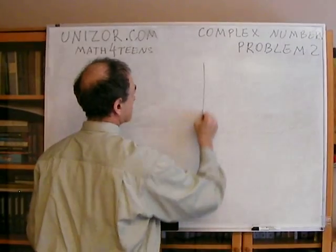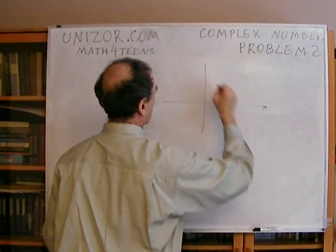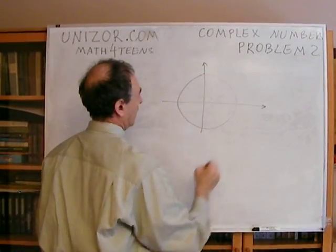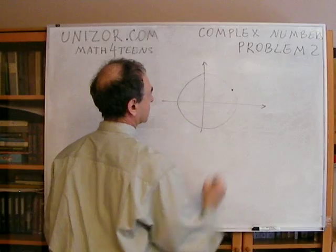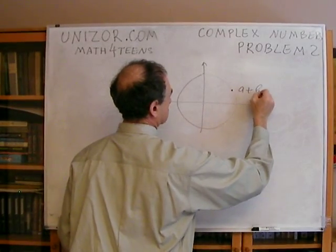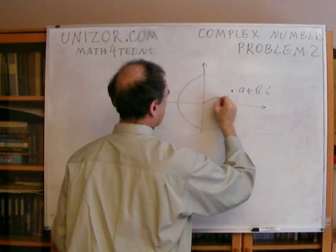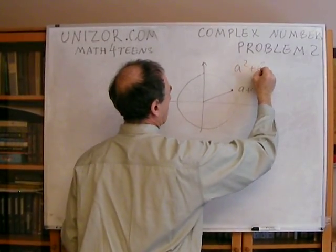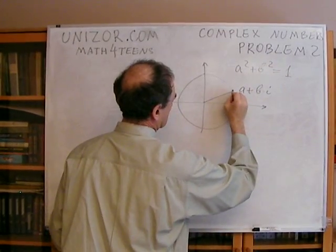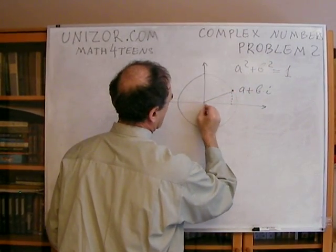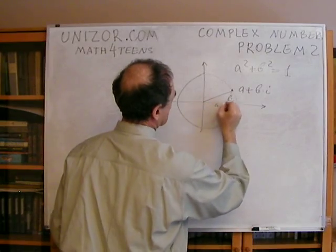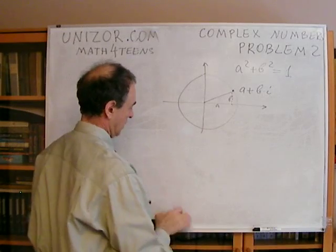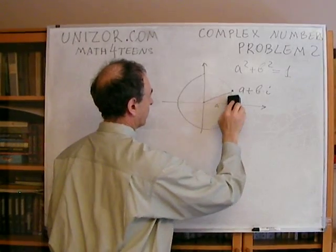Let's consider you have a unit circle and a complex number on it: a plus bi. Since it's on the unit circle, it means that a squared plus b squared is equal to 1. This is a squared, this is a, and this is b. So a squared plus b squared equals 1 — that's what it means to be on the unit circle.